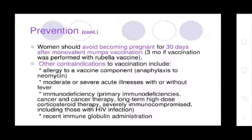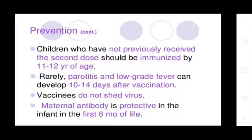Women should avoid becoming pregnant for 30 days after mumps vaccination, or 3 months if vaccination was performed with rubella vaccine. Contraindications include allergy to vaccine components, anaphylaxis to neomycin, moderate to severe acute illness with or without fever, primary immunodeficiency, cancer therapy, long-term high-dose corticosteroid therapy, severely immunocompromised individuals including those with HIV, and recent immunoglobulin administration. Children who have not received the second dose should be immunized by 11 to 12 years of age. Rarely, parotitis and low-grade fever can develop 10 to 14 days after vaccination. Maternal antibody protects infants in the first 6 months of life.